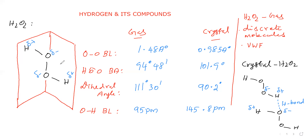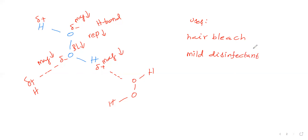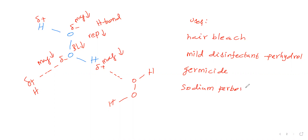This completes the discussion of crystal phase versus gaseous phase differences in hydrogen peroxide. Next, we will see the uses of hydrogen peroxide. Hydrogen peroxide is used as a hair bleach and as a mild disinfectant. It is sold in the market under the commercial name Perhydrol. It is also used as a germicide. Hydrogen peroxide is used for manufacturing sodium perborate and sodium percarbonate.